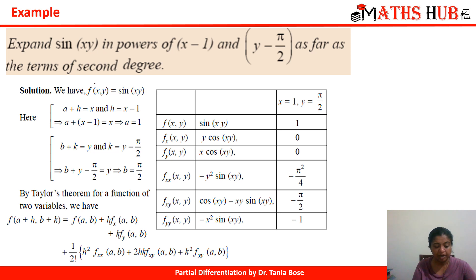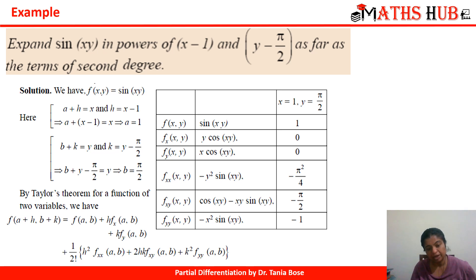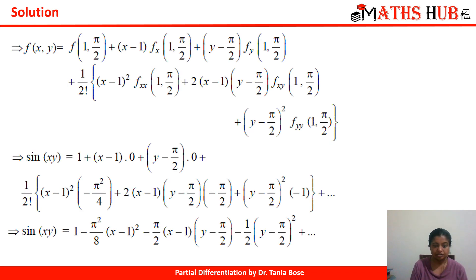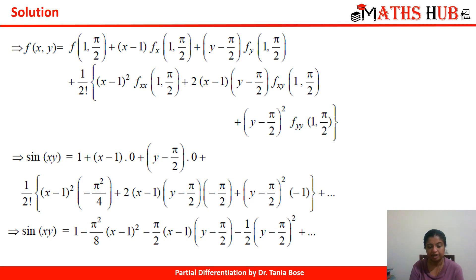By Taylor's theorem for a function of two variables, f(a+h, b+k) equals f(a,b) + h·fx(a,b) + k·fy(a,b) + 1/2![h²·fxx(a,b) + 2hk·fxy(a,b) + k²·fyy(a,b)]. Substituting a = 1, b = π/2 and the table values, and simplifying the coefficients, we get the expansion as 1 − (π²/8)(x−1)² − (π/4)(x−1)(y−π/2) − (1/2)(y−π/2)² and so on.